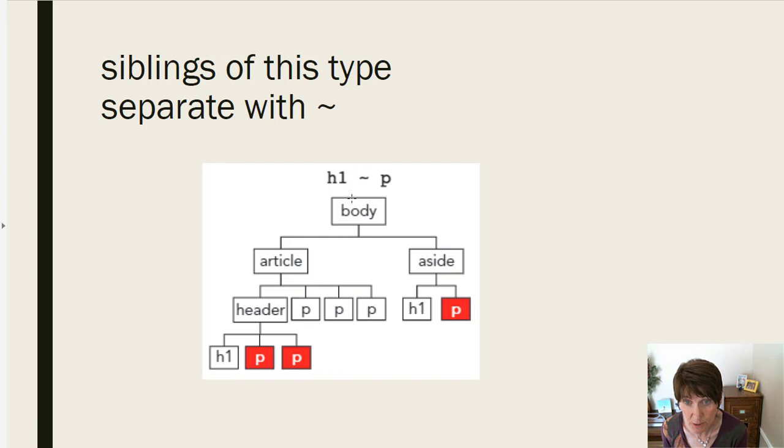When you use a tilde between them, then it talks about all the siblings. So in this case, we're going to have all the paragraphs that are sibling to H1. And so down here under the header, there are three siblings, H1, paragraph, and paragraph. And it will pick up, the style will be applied to both those paragraphs, because they're siblings of the H1. Same with the aside. It'll pick up all the paragraphs that are sibling to the H1.